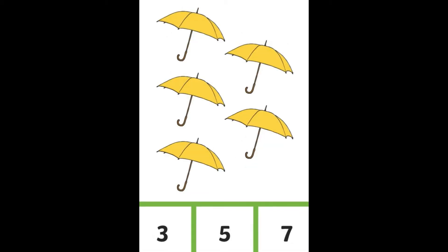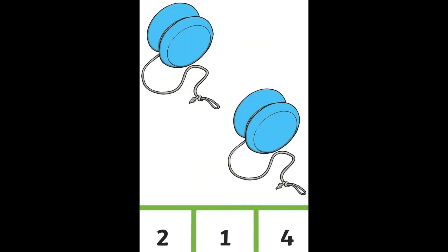How many umbrellas? Is it three, five, or seven? It's five. How many yo-yos? Is it two, one, or four? It's two.